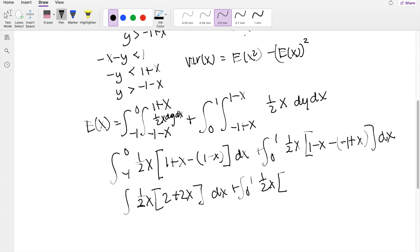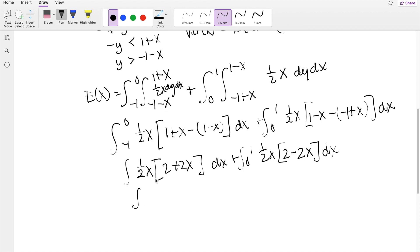And on this side, you get 1 half x, 1 minus minus 1, so that's 2, minus x minus 1, so that's minus 2x, dx. So this one, you get, when you multiply the 1 half x in, you get x plus x squared, integrating from negative 1 to 0, plus 0 to 1, 1 half x, there's 1x minus x squared, dx.